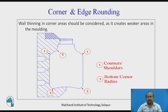Corner and edge rounding. Corners and shoulders are marked with number 1 at three locations, and bottom corners are marked with number 2 as radii. The important point regarding corner and edge rounding is that wall thinning in a corner area should be considered, as it creates weaker areas in the molding.